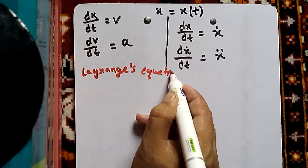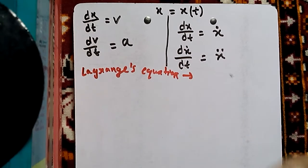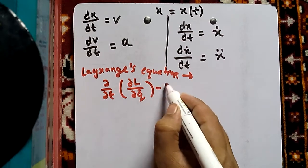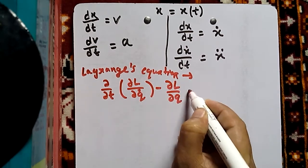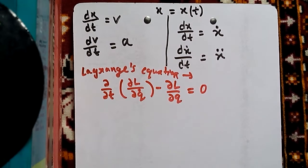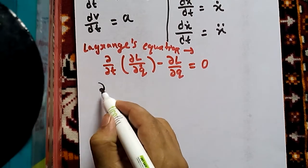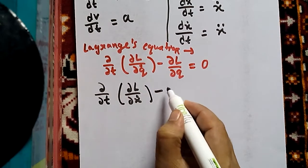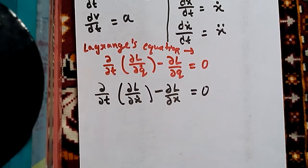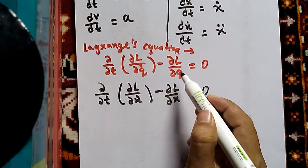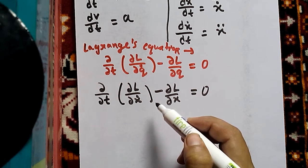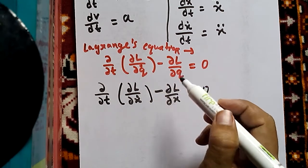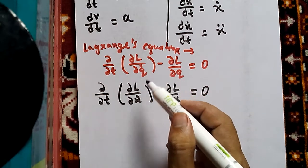Lagrange's equation is: d/dt (∂L/∂q-dot) − ∂L/∂q = 0. We will change this equation as per our problem: d/dt (∂L/∂x-dot) − ∂L/∂x = 0, where q-dot is the same as x-dot and q is the same as x. Since the Lagrangian in our problem contains x-dot and x rather than q-dot and q, we convert accordingly.